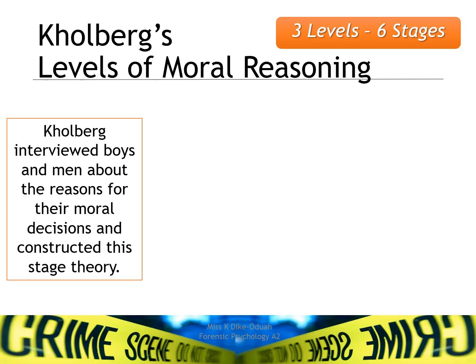The second explanation under cognitive explanations for offending behaviour is Kohlberg's levels of moral reasoning. Kohlberg interviewed boys and men about the reasons for their moral decisions and constructed a stage theory. In his research, he asked participants to describe whether a particular act or behaviour was appropriate or right in various scenarios, and recorded their responses.